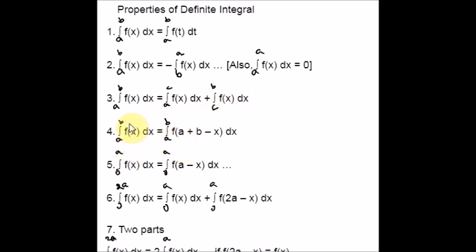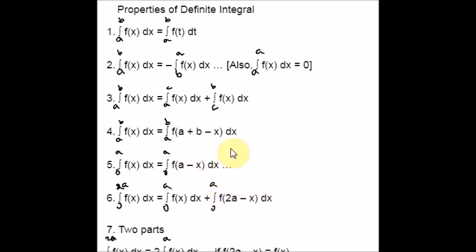The fourth property: the integral from a to b of f(x) dx is equal to the integral from a to b of f(a + b − x) dx. You can just substitute a plus b minus x in between — this is one of the important properties. The fifth property: the integral from 0 to a of f(x) dx can be written with f(a − x). This is very similar to the fourth property. The sixth property is for 0 to 2a, and it is the combination of the earlier ones. The sixth is related to the fifth, and you can derive one from the others.